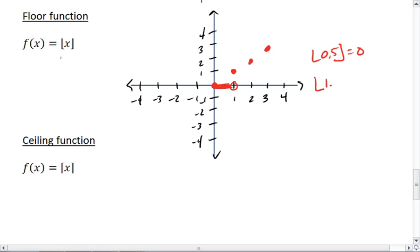Anything from 1 to 2 gives me back a 1. From 2 to 3, I get 2 as my output. And from 3 to 4, I get 3, and so on.